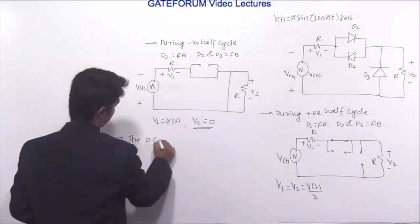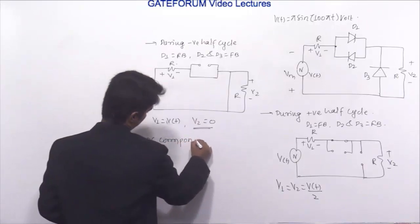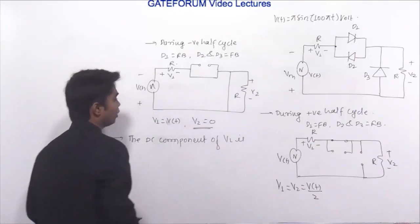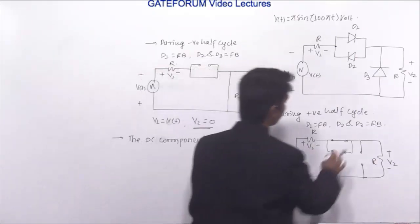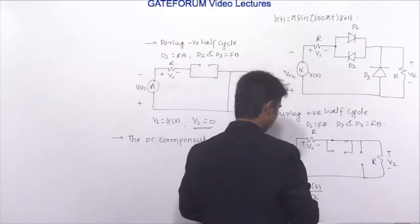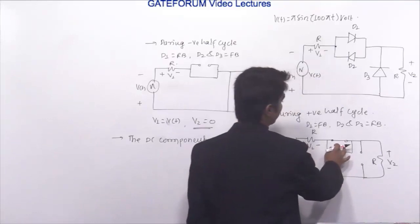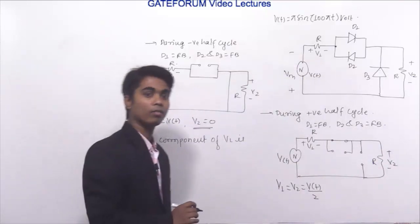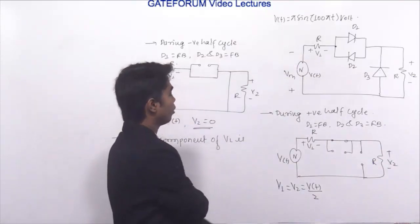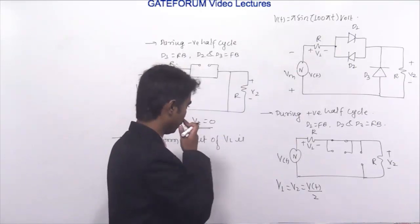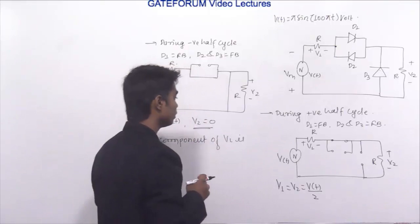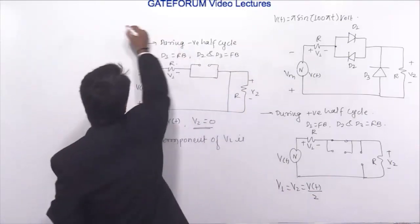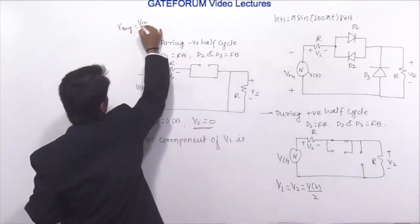Now finding the DC component of V1: during the positive half cycle only D1 conducts, so the circuit behaves as a half wave rectifier. The DC value means the average value. For a half wave rectifier, the average value is Vm/pi.